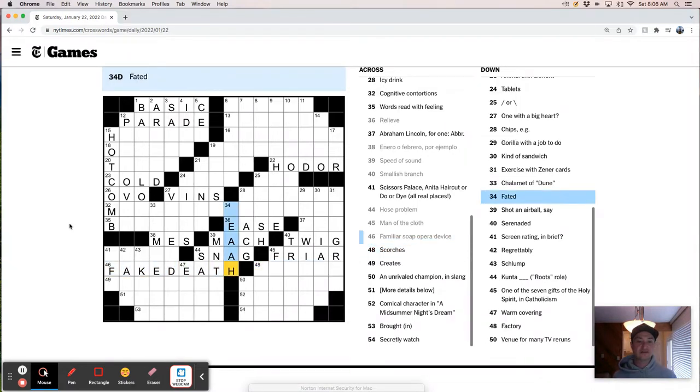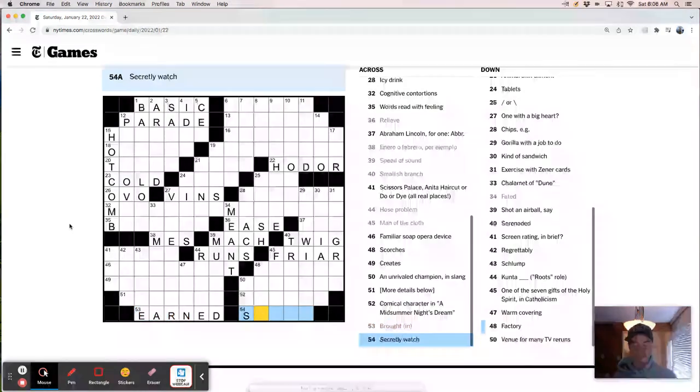Scorches. And I can see I've got something wrong here. Fated. Fated. Maybe meant. Fated meant. This is host problems. Runs. Fated. Meant. Kind of like that. So I'm going to roll with it. Scorches. Creates. An unrivaled champion. More details below. Comical character in A Midsummer Night's Dream. Brought in earned. Secretly watched. Spy on.